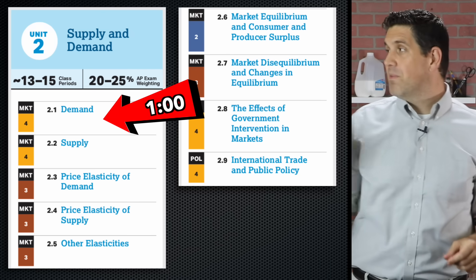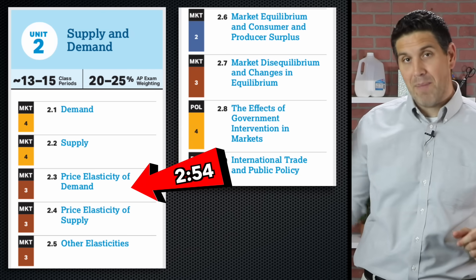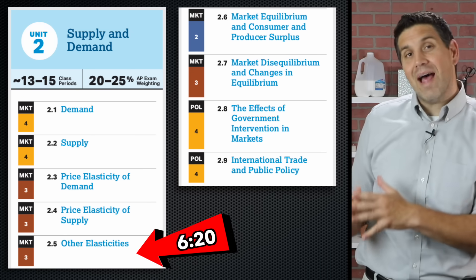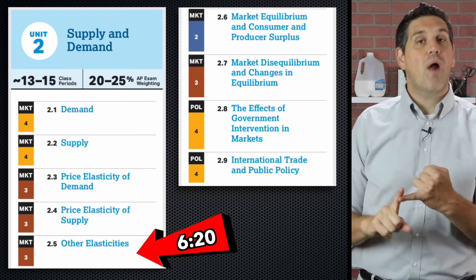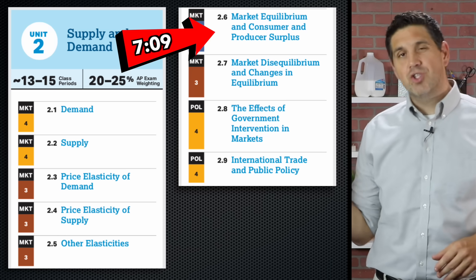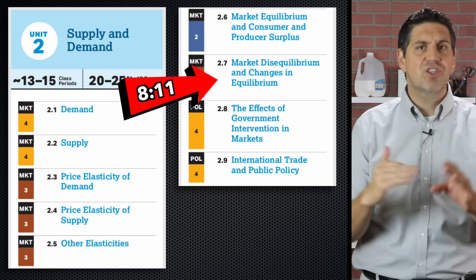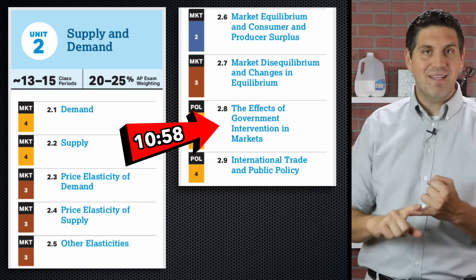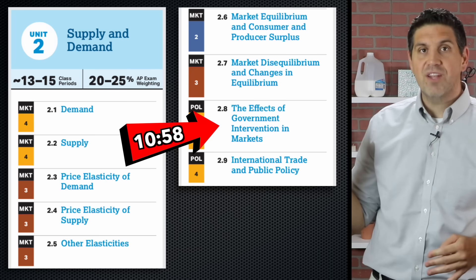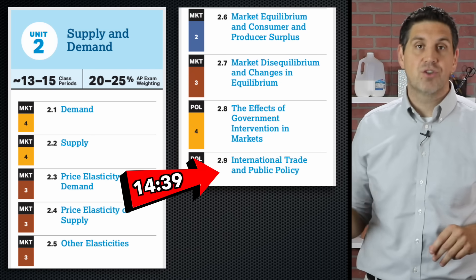I'm going to start with demand, then supply, then elasticity — elasticity of demand, elasticity of supply, and the two other types: cross price and income. Then equilibrium, consumer and producer surplus, how these curves shift and changes in the market, price ceilings, floors, taxes, subsidies, government intervention, and finish it off with international trade.